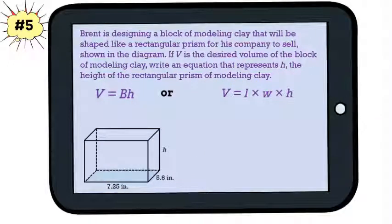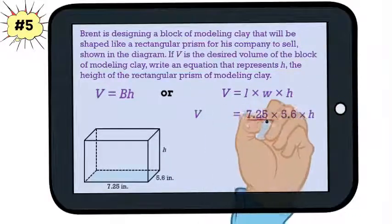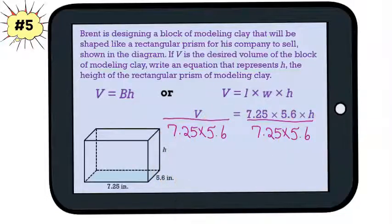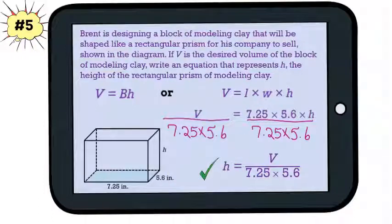First we'll substitute in our numbers for length and width. Then we'll divide both sides of the equation by the product of these two numbers to get H. H = V ÷ (7.25 × 5.6).